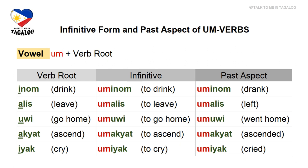Akyat, meaning ascend or go up. The infinitive form is umakyat, meaning to ascend or go up. The past tense is the same: umakyat, meaning went up. Then iyak, meaning cry — iyak starts with an I, so we add UM before: umiyak, meaning to cry. The past tense is also umiyak, meaning cried.